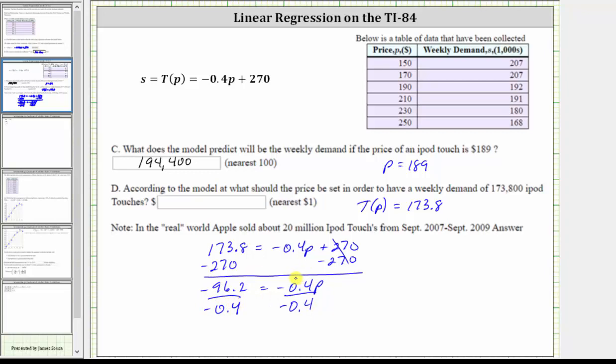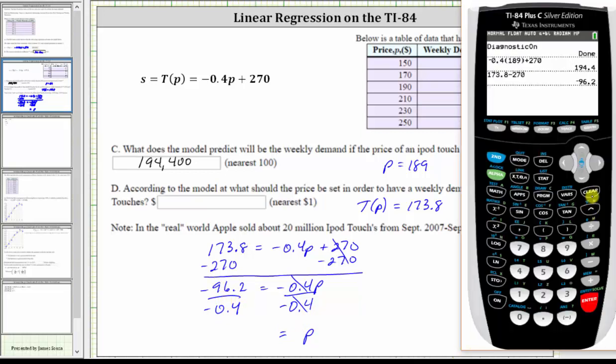Simplifying on the right first, this simplifies to one P, or just P. So P is equal to this quotient here. Going to the calculator, negative 96.2 divided by negative 0.4 is equal to 240.5.